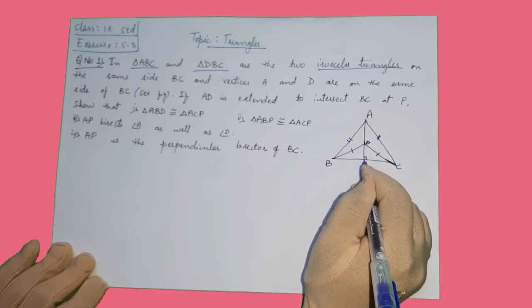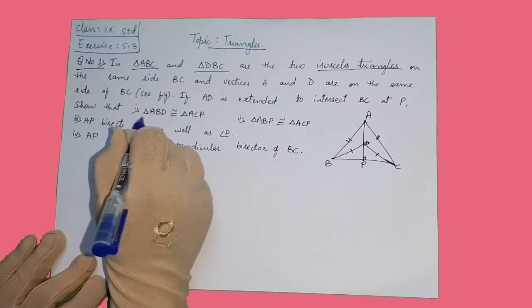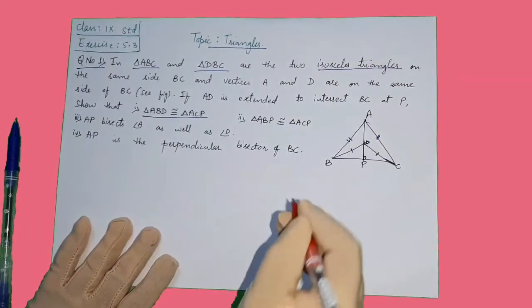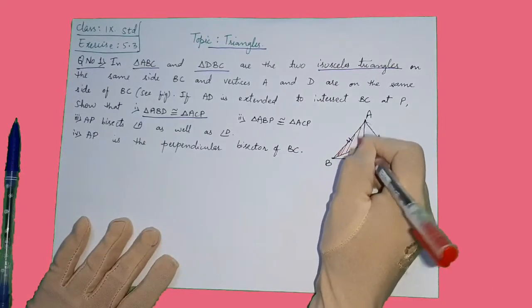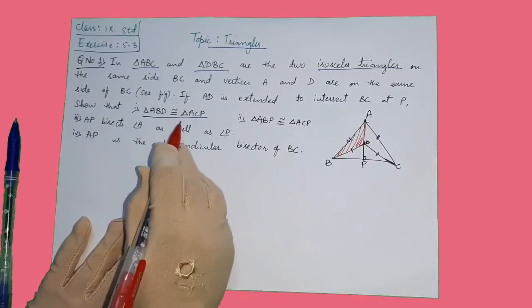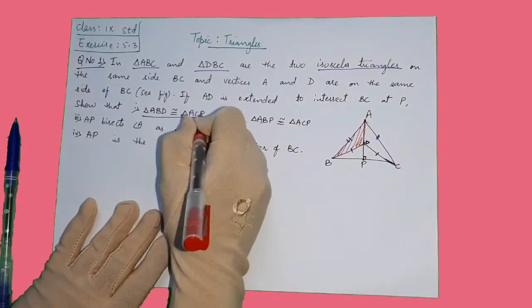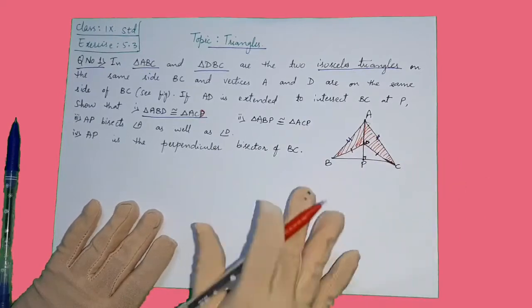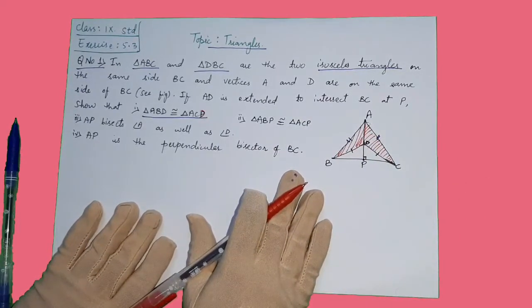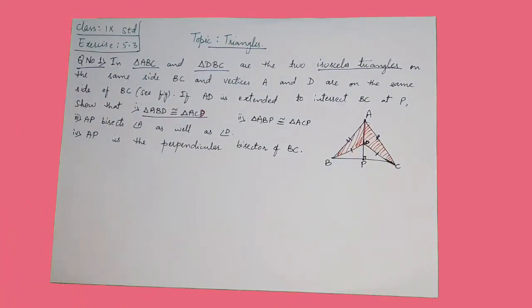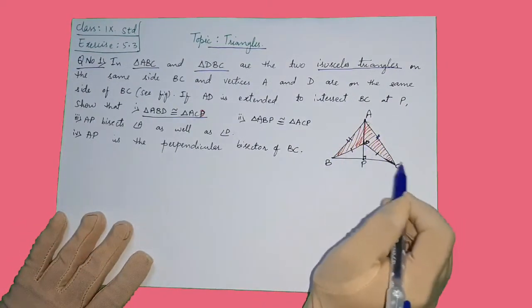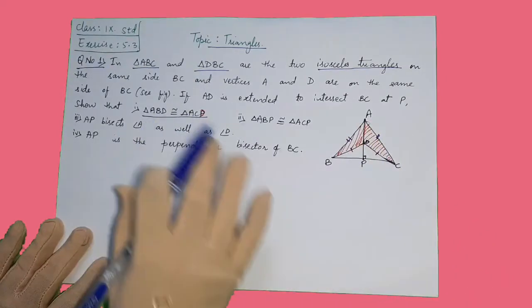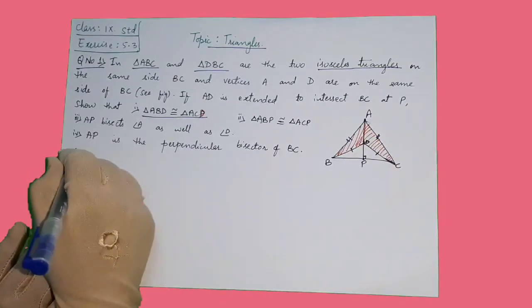First, we have to check the triangles in the figure — triangle ABD and triangle ACD. This figure is already given in the question. ABD is one triangle and ACD is the other triangle. We have to prove these two triangles are congruent. It's very easy to prove the congruency because AB equals AC, DB equals DC, and they share a common side AD. So by SSS congruence rule, both triangles will be congruent.